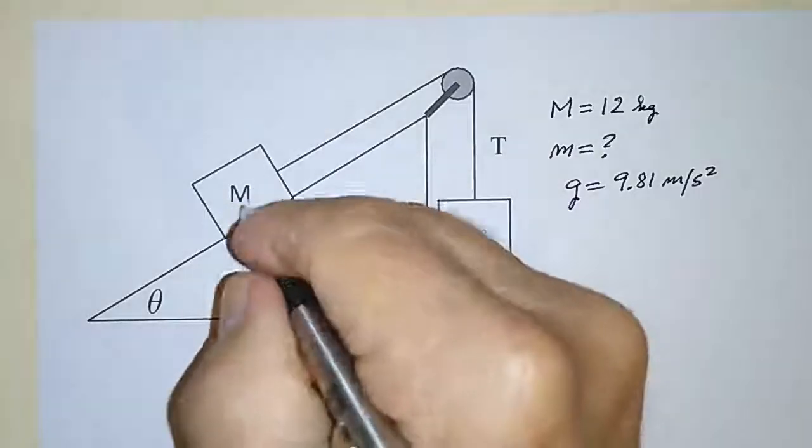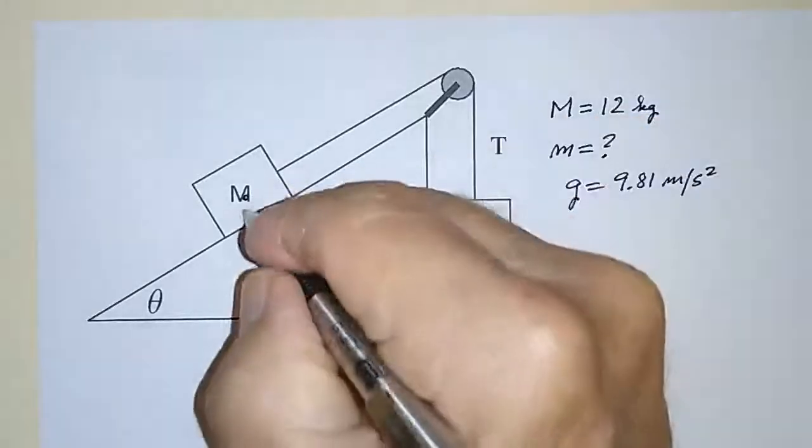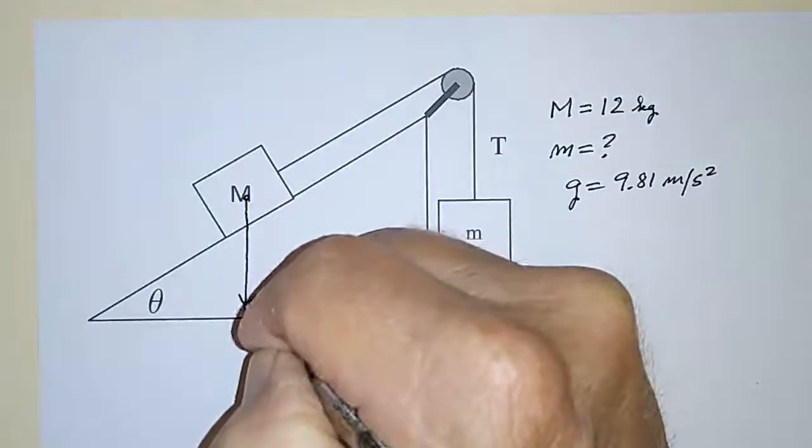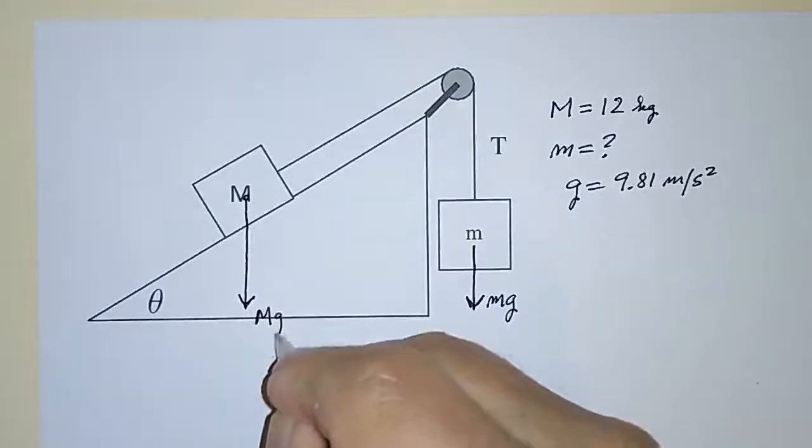This mass, big M, is also acted on by the force of gravity, and I'm going to draw that line like this, and that's big M times G.